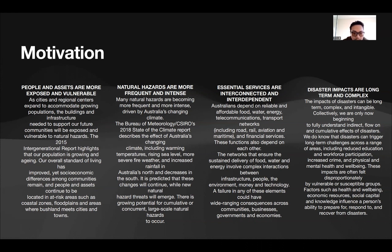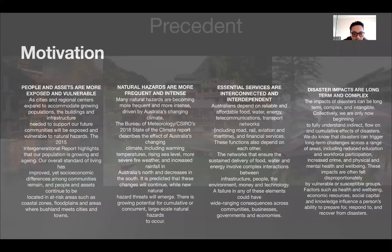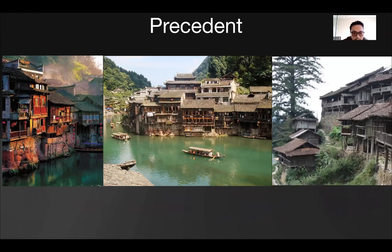An elevated house is simply a house built on stilts or a raised foundation. The idea behind elevated houses is to raise them above the flood level, thereby reducing the risk of damage and destruction during floods. In areas where floods occur frequently, building elevated houses can be an effective way to protect your home and family.